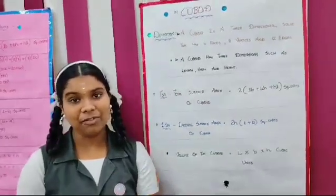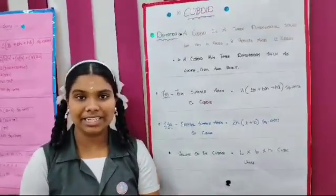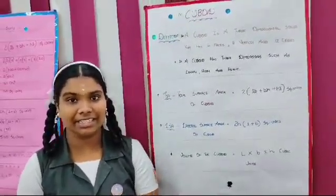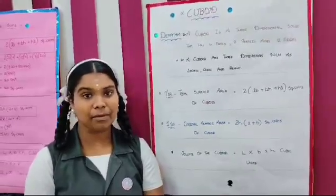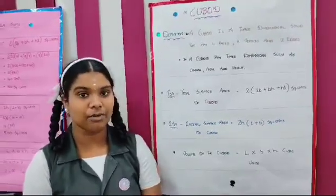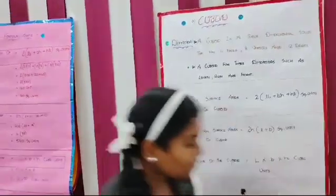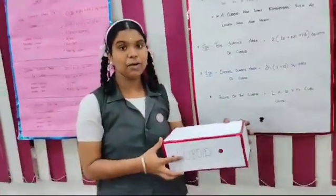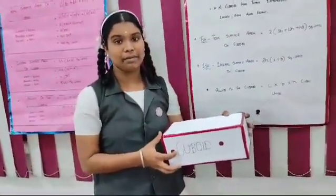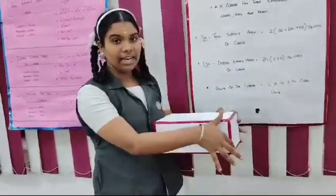Good morning everyone. I am Kavinia from class 9 at the Great National IT International Matriculation High Secondary School. Let us see about surface area of cube and cuboid. First, cuboid. The definition of a cuboid is: a cuboid is a three-dimensional shape with length, breadth and height.